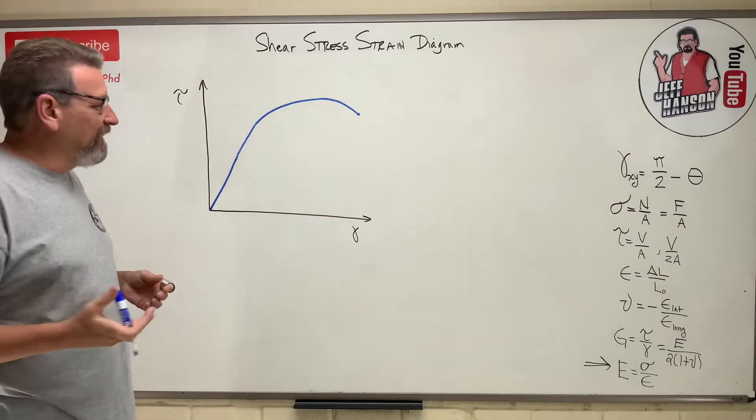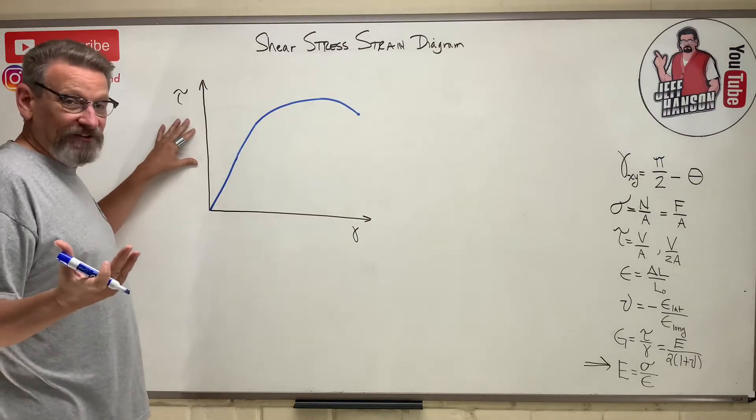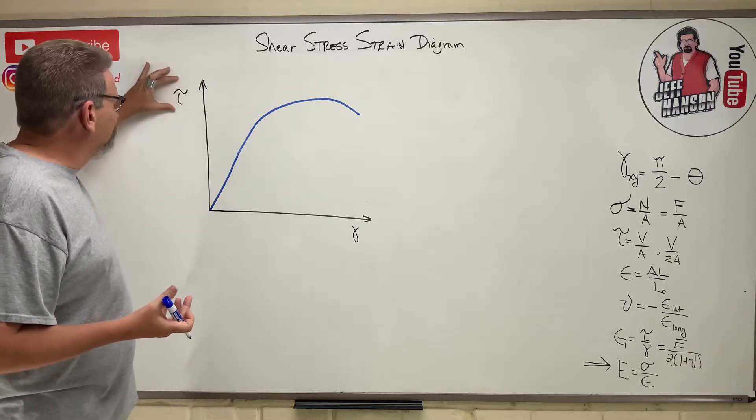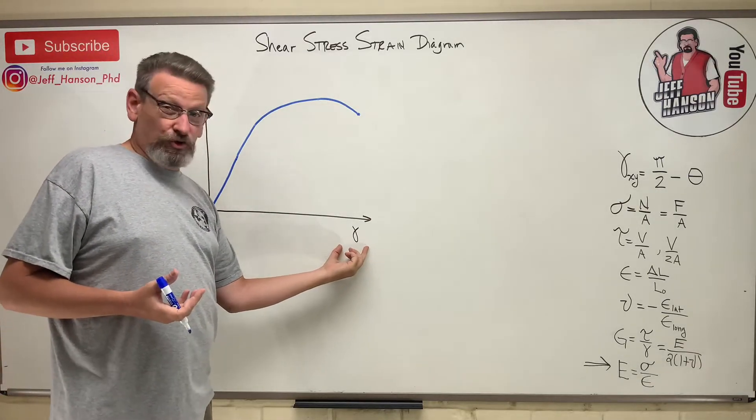It's very similar except it has different axes. This time on this axis we have tau, which is shear stress, and over here we have shear strain.